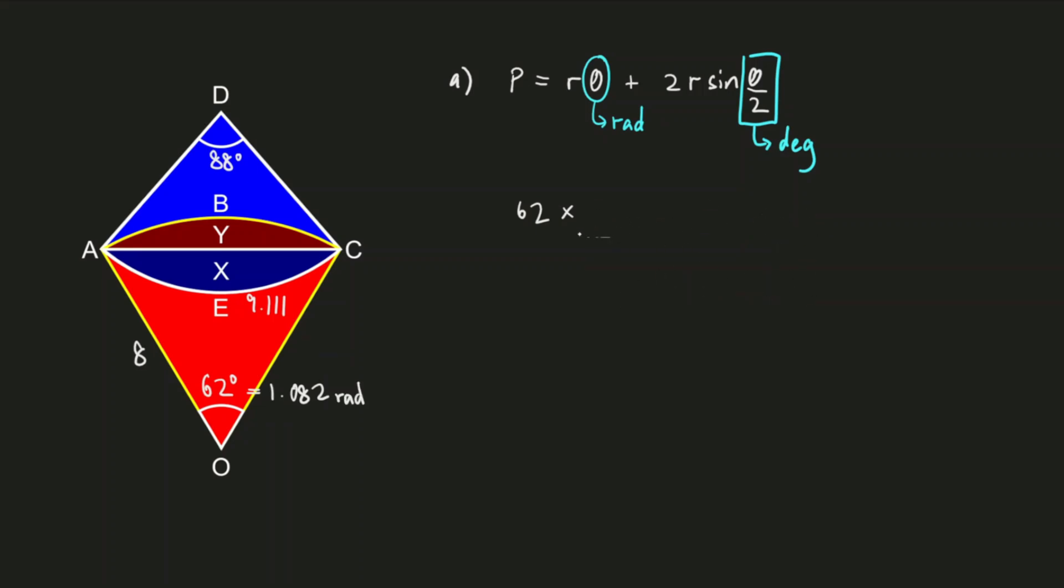Now we can simply substitute the value into our formula. We start with r - the radius of the sector is 8 centimeters, so that would be 8 × 1.082 radians (this has to be in radians), plus 2 times the radius is 8, times sin(θ/2). This time we key in degrees: 62 ÷ 2 degrees. We will get 16.90 centimeters. This is the perimeter of the region Y.